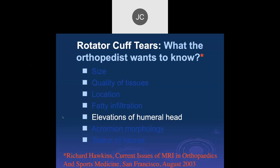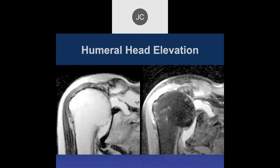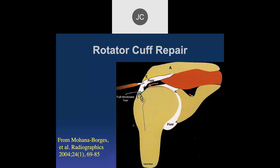Regarding humeral head elevation: a case of chronic full-thickness supraspinatus and infraspinatus tears with proximal retraction shows elevation of the humeral head and direct bone-on-bone articulation with degenerative changes. There's remodeling of the inferior surface of the acromion indicating this has been present for many years. With this degree of chronic disease, the only surgical option is possibly a replacement.